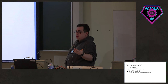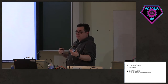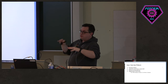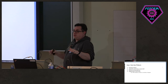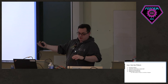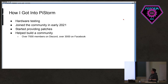How I got into PiStorm: I was designing some new hardware for a Commodore Amiga. Another advantage of having Musashi on PiStorm is that you can change the entire configuration of the Amiga on the fly — different OS ROM to boot into, different RAM configuration, different hardware configurations, all changeable on the fly. I started providing patches and helped build a community. We had 7,000 members on Discord and 3,000 on Facebook, so it's grown into a pretty big community.